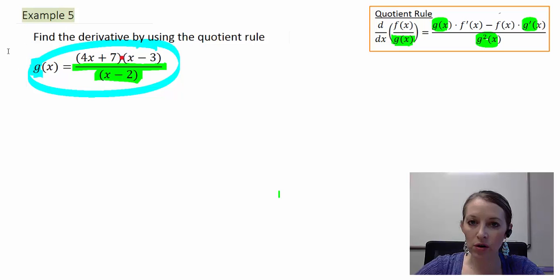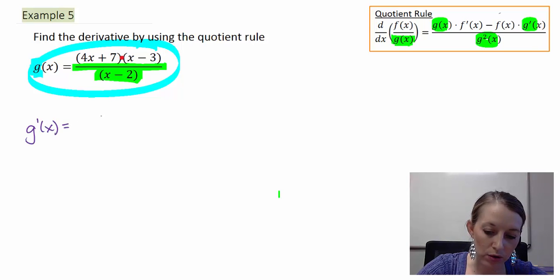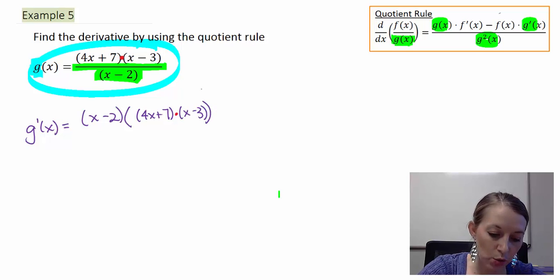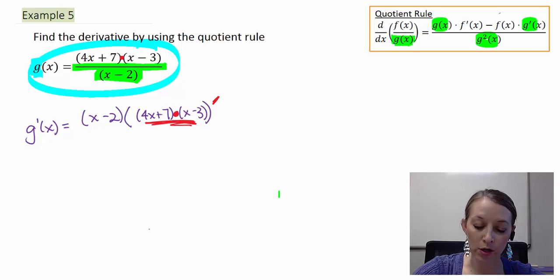Now let's go ahead and write out our quotient rule, and then you can see where our product rule would fit in. So we have g prime of x equals the original of the bottom, x minus 2, times the derivative of the top. Now my top is 4x plus 7 times x minus 3. So when I take the derivative of the top, and since there is a product in there, that's where I would have to apply my product rule.